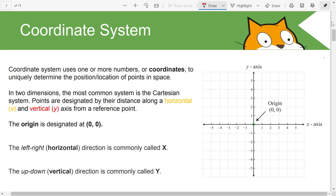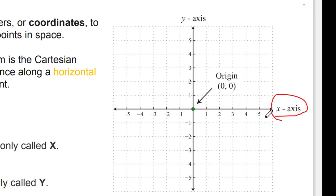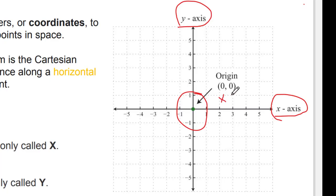First, what is a coordinate system? A coordinate system uses one or more numbers or coordinates to uniquely determine the position or location of points in space. Points are designated by their distance along the horizontal, which is also referred to as the x-axis, and then the vertical, which is known as the y-axis. The origin is located at 0 and 0 — the first 0 is the x-axis and the second 0 is the y-axis.